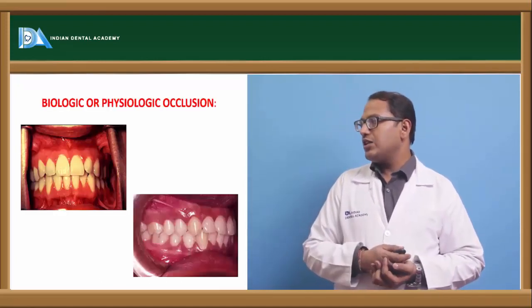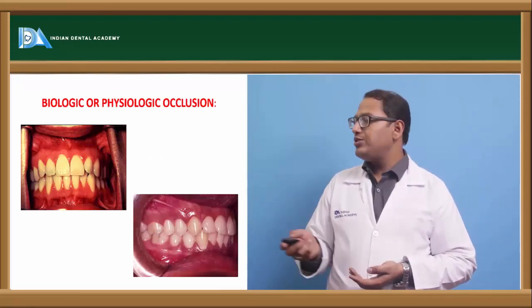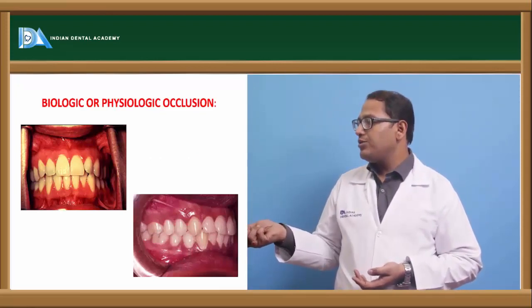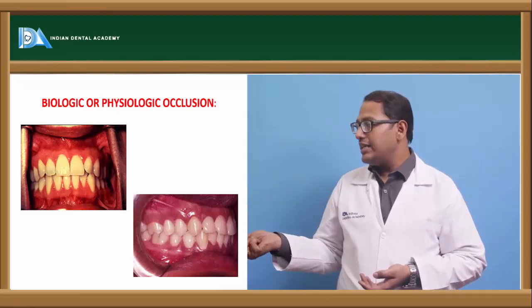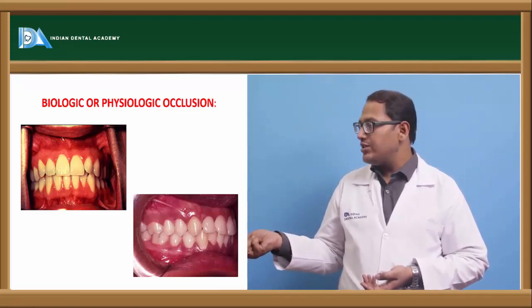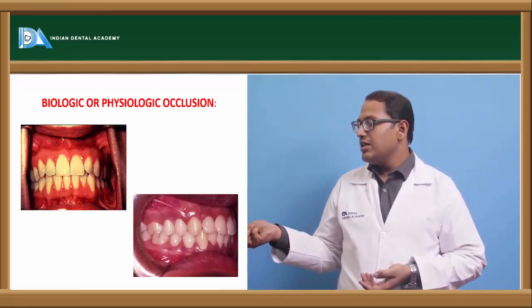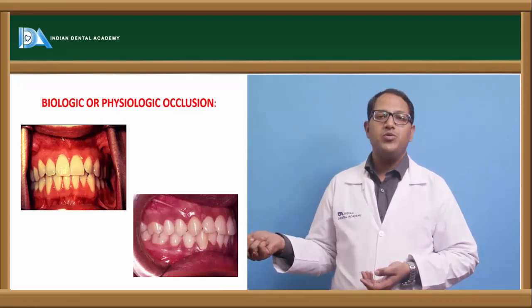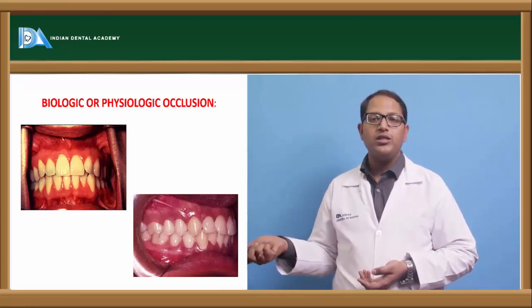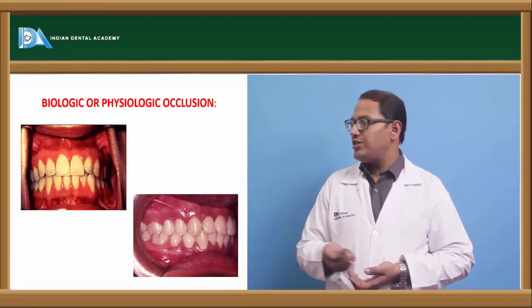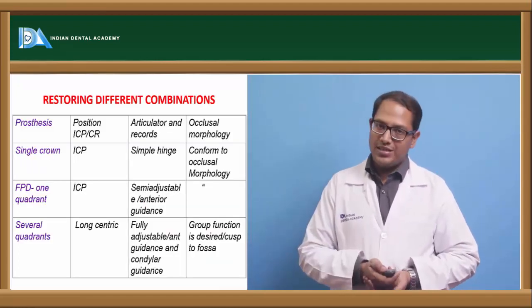The biologic or the physiologic occlusion: you need to consider not only the teeth but also the mucosa, surrounding structure, mobility, vitality of the teeth, carious lesion, the musculature, the tonicity of the muscles present, the facial expression, the neuromuscular control of the patient - all these things are to be taken under consideration.